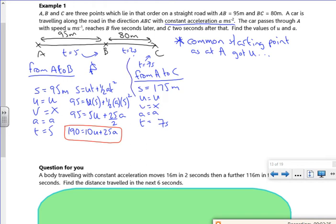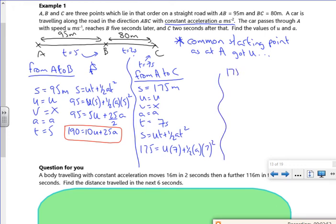So if I use S equals ut plus a half at squared, I've got 175 which is u times seven plus a half a times seven squared. So I've got 175 which is 7u plus 49 over 2 a. I can double through as well, so it's going to be 350 which is 14u plus 49a.